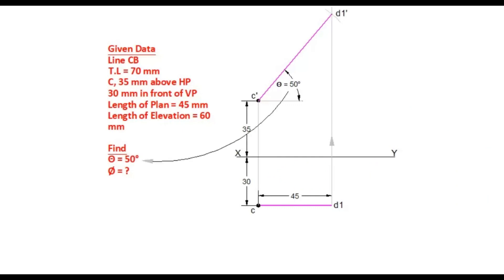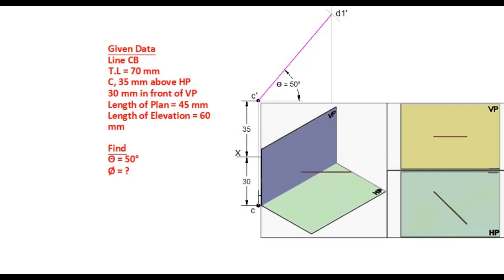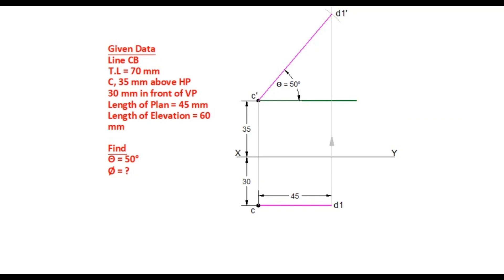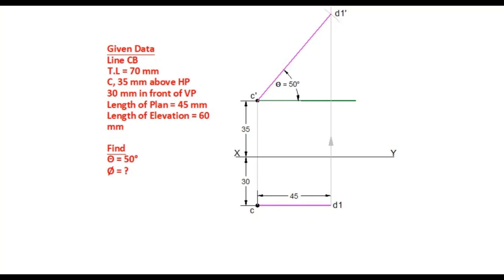Now assume that the line is parallel to HP and inclined to VP. In this condition, the plan of the line will have true length with its inclination to VP, and the elevation will be a line parallel to the XY line with its length of elevation. In our problem, length of elevation is 60mm. So draw a horizontal line from C dash for a distance of 60mm. Let the end point of this line be D2 dash. Draw a projector through D2 dash.